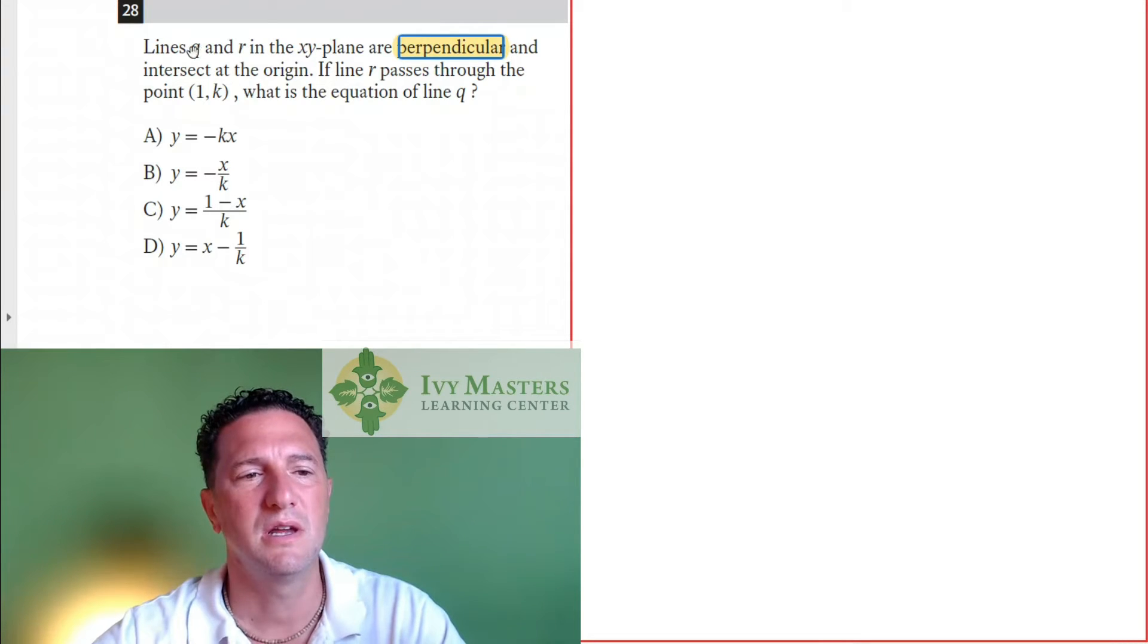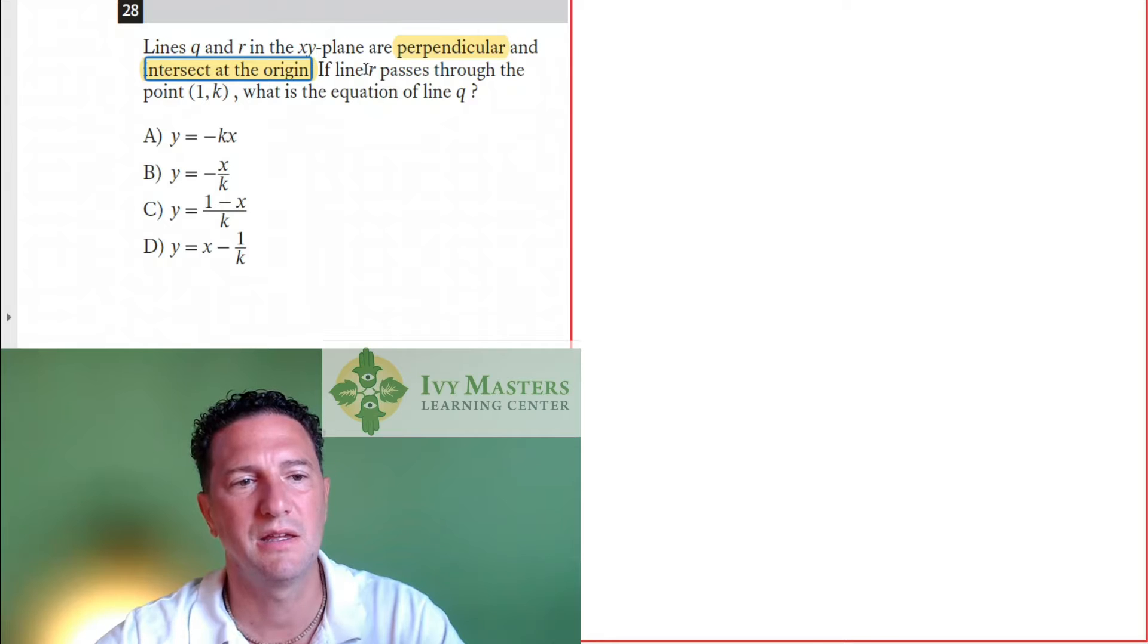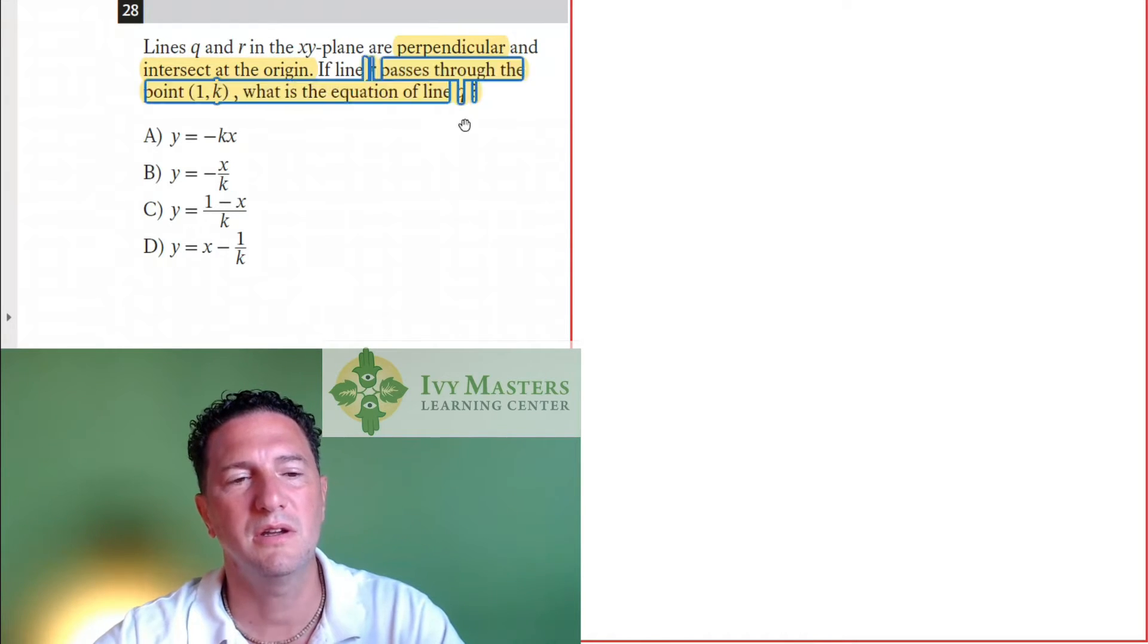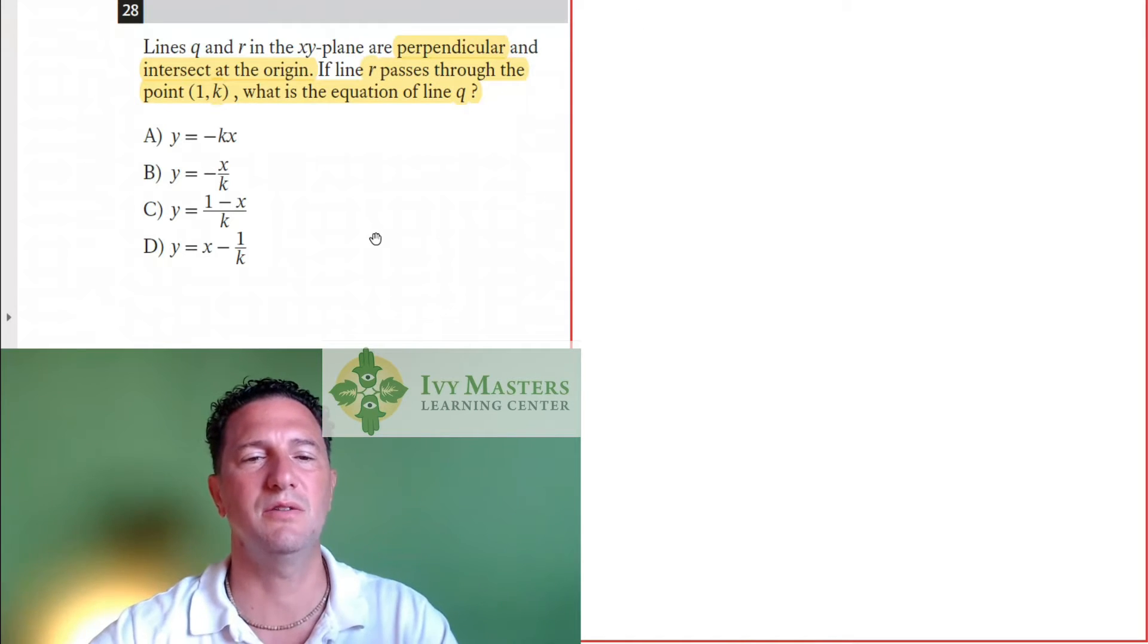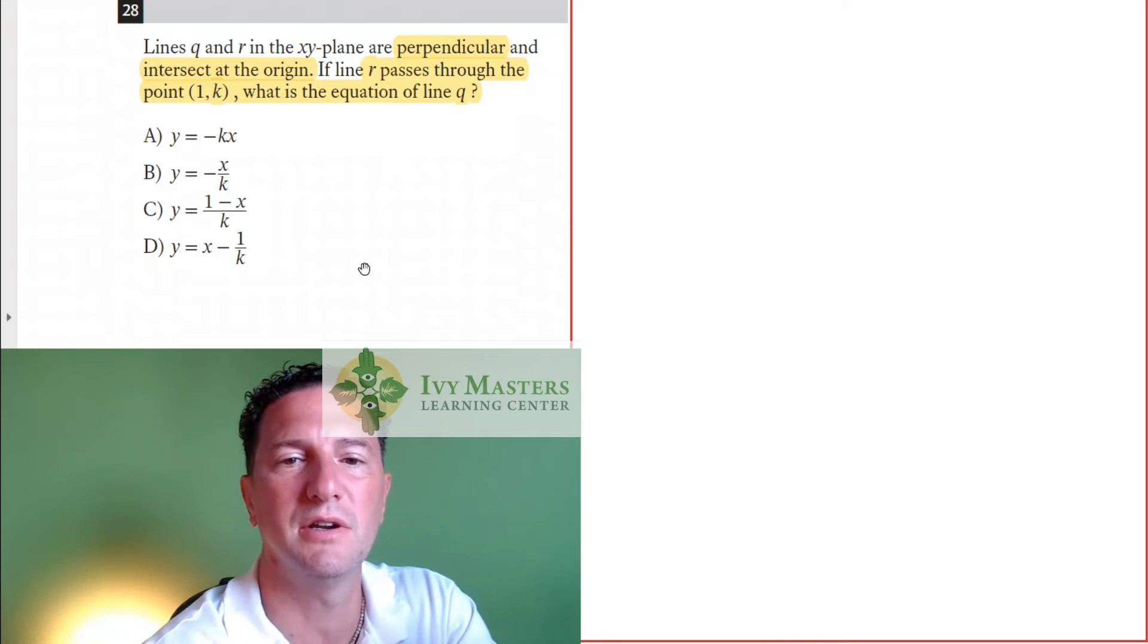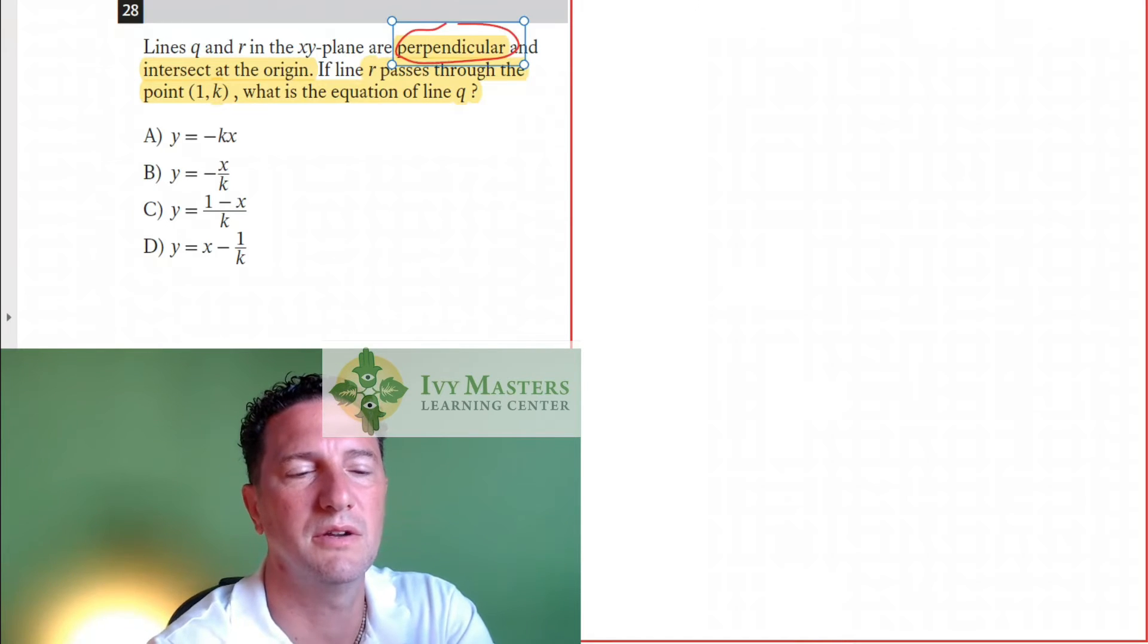28 reads, line Q and R in the xy-plane are perpendicular and intersect at the origin. If R passes through the point 1,k, what is the equation of line Q? All right. So let's take a crack at it. By the way, as soon as you see the word perpendicular, you know you're working with slope. So here you go.